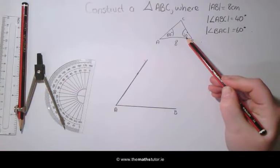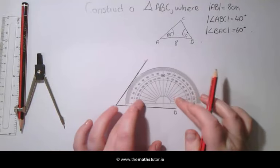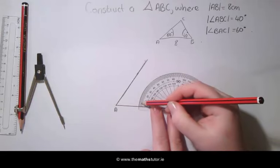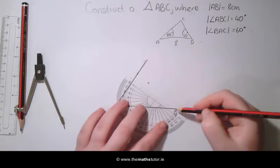We then need an angle of 40 degrees at the point B. Placing our protractor again so that it is in the center and starting from zero, we are going to mark an angle of 40 degrees and draw a line through this.